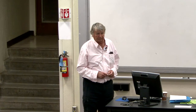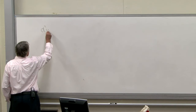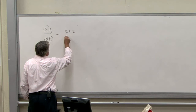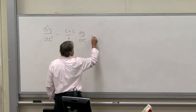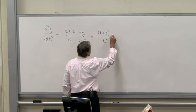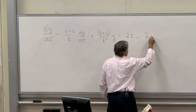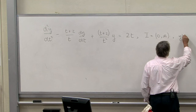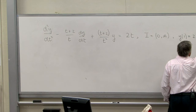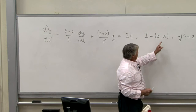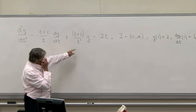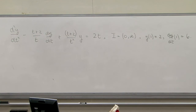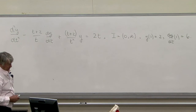First, I want to go over a couple more examples of the method of variation of parameters. Our first example is d²y/dt² minus (t+2)/t · dy/dt plus (t+2)/t² · y equals 2t, on the open interval t greater than 0, with initial conditions y(1) = 2 and dy/dt at t=1 equal to 6. We have to give the initial conditions where the coefficients are continuous — they're not continuous at t=0, so we're working in the positive t domain.